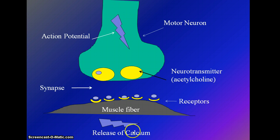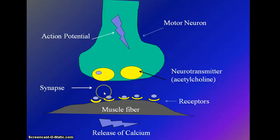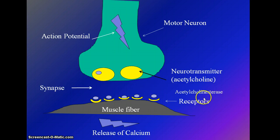Before going over muscle contraction, let's come back to the synapse. Once acetylcholine binds, it can't just stay there — if it did, it would keep the muscle in a constant contraction. So within the synapse, there is an enzyme called acetylcholine esterase.